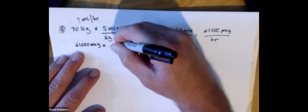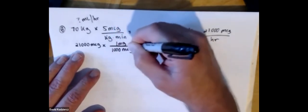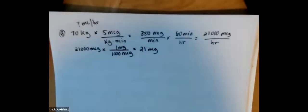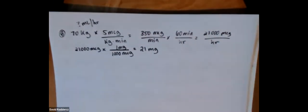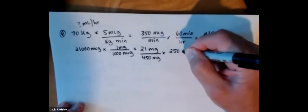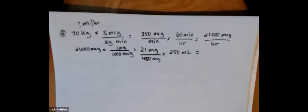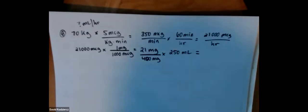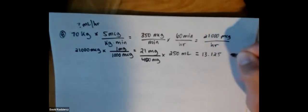No matter how you dice it, as long as you get to 21 milligrams, you can then do what you've probably done time and time again — just do your ordered over available. So 450 milligrams available: 21 times 250 divided by 400.